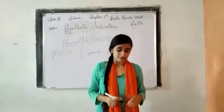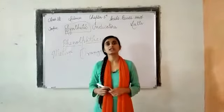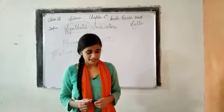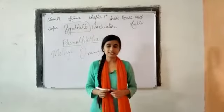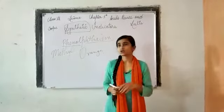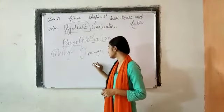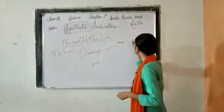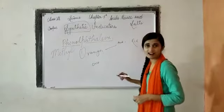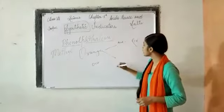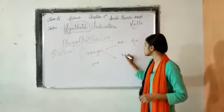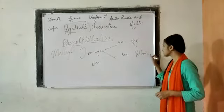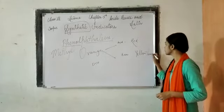Next is methyl orange. Methyl orange ka thoda alag hota hai — when we put it into an acid solution, it gives a red color. And when we put methyl orange into a base, it is going to show either orange or yellow color. So: acid mein dalenge toh red color dega, aur base mein dalenge toh yellow or orange color dega.